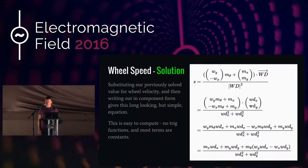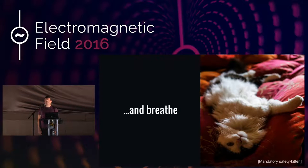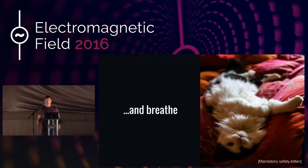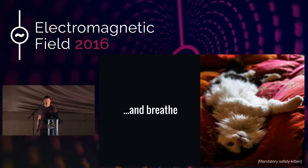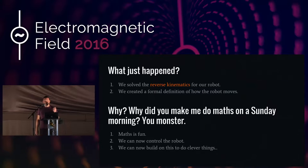We've just solved what's known as the reverse kinematics for the robot. Kinematics relates the motion the robot is actually doing to how we actually have to drive it. The reverse kinematics is: given the target motion, how do we drive our electrical gear to make it go?